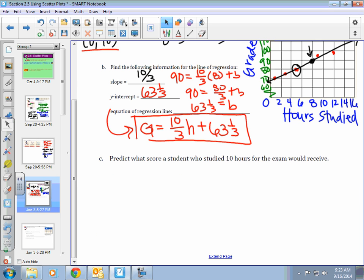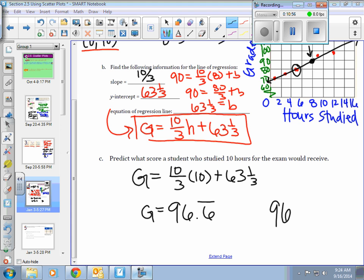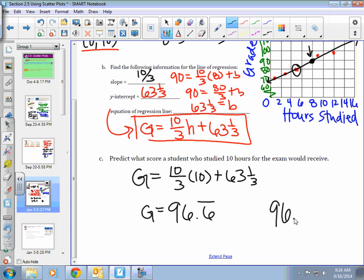Finally, it says predict what score a student who studied 10 hours for the exam would receive. I plug 10 in here into our equation we just came up with. If you put it in your calculator, the grade that they would get is 96.6 repeating. Let's round that. We get 96.667. That would be the grade they would receive.